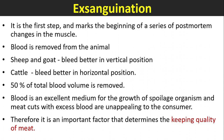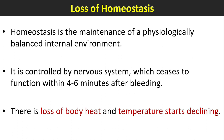Exsanguination is the first step and marks the beginning of a series of post-mortem changes in the muscle. Blood is removed from the animal. Sheep and goat bleed better in a vertical position, but cattle bleed better in a horizontal position. About 15 percent of blood volume is removed. Blood is an excellent medium for the growth of spoilage organisms, and meat cuts with excess blood are unappealing to consumers, making exsanguination an important factor determining the keeping quality of meat.